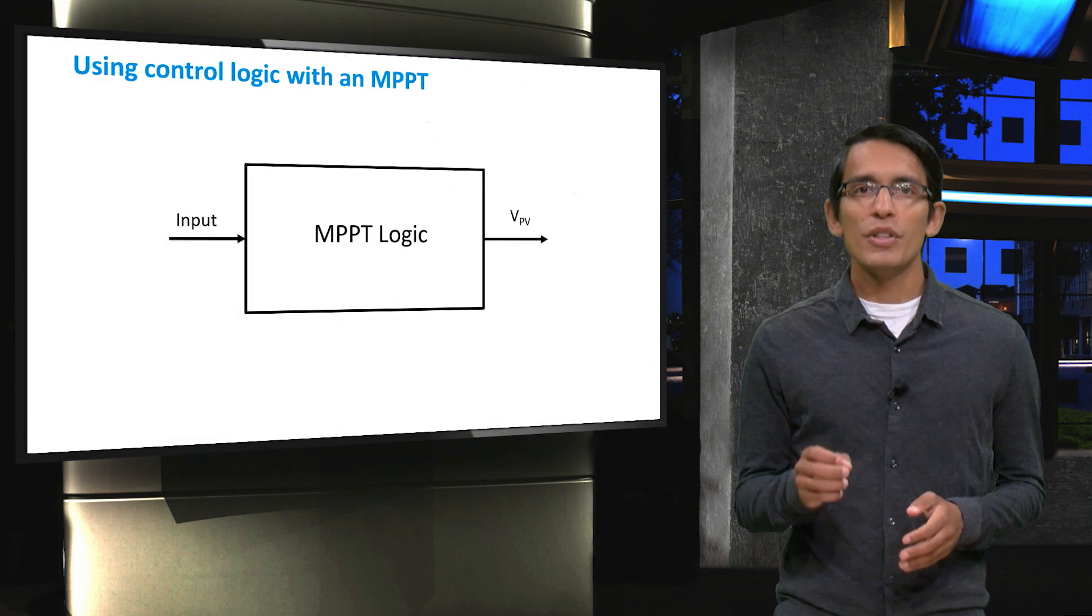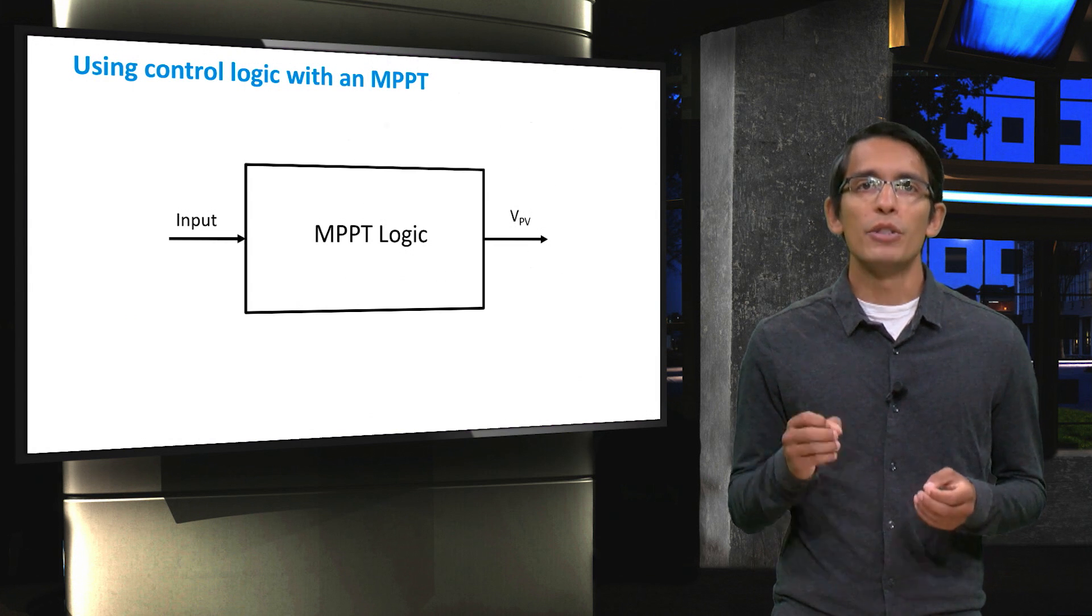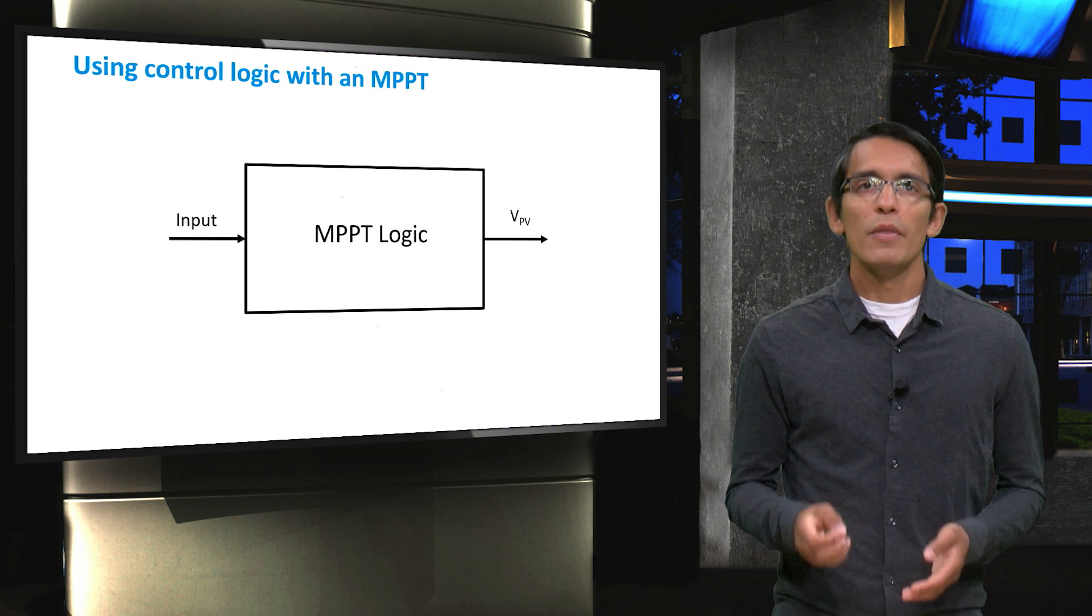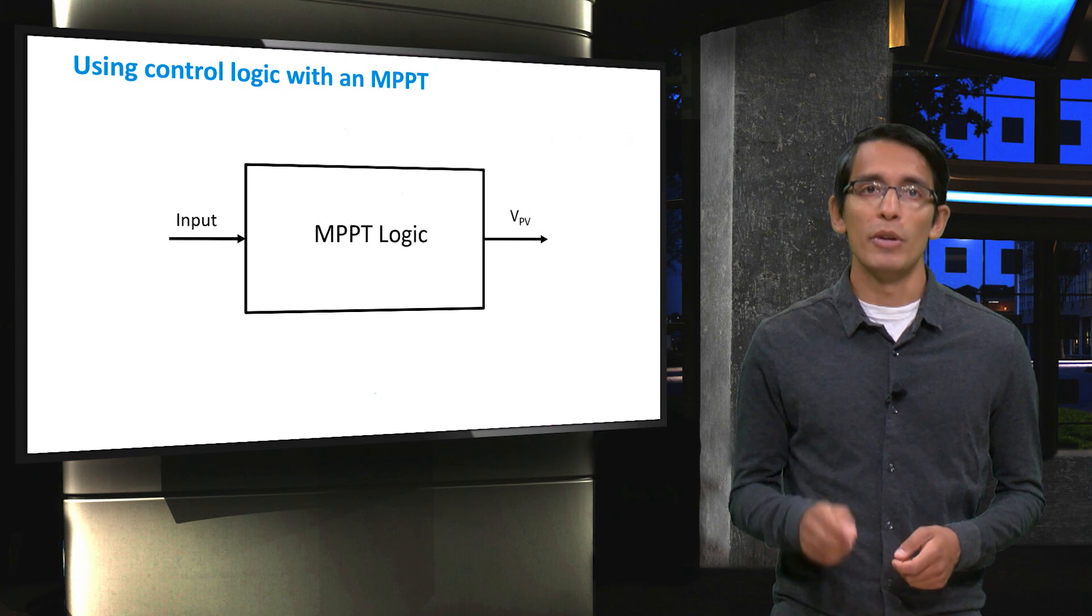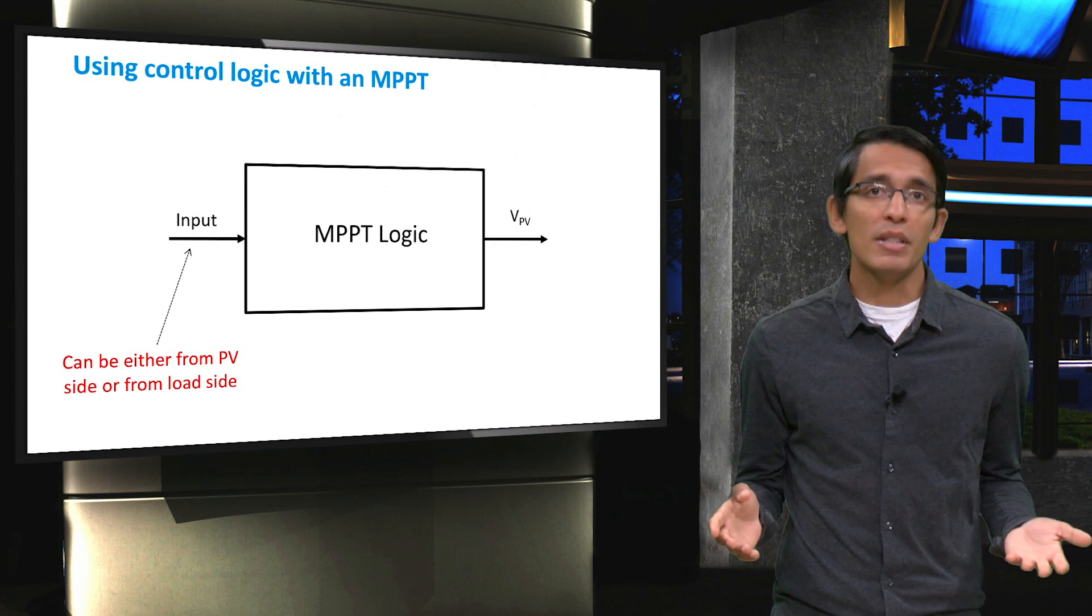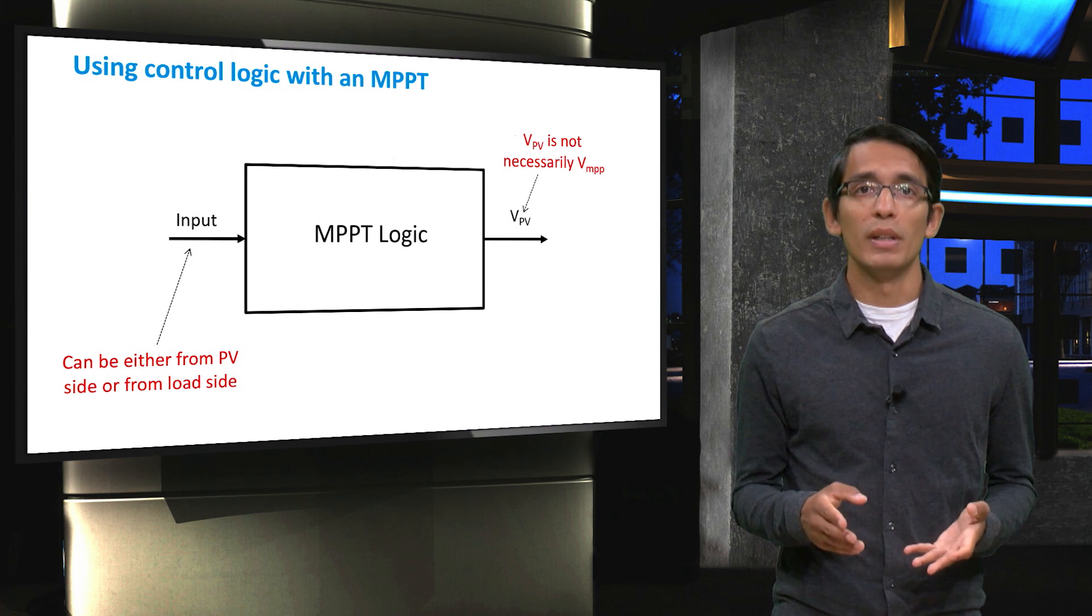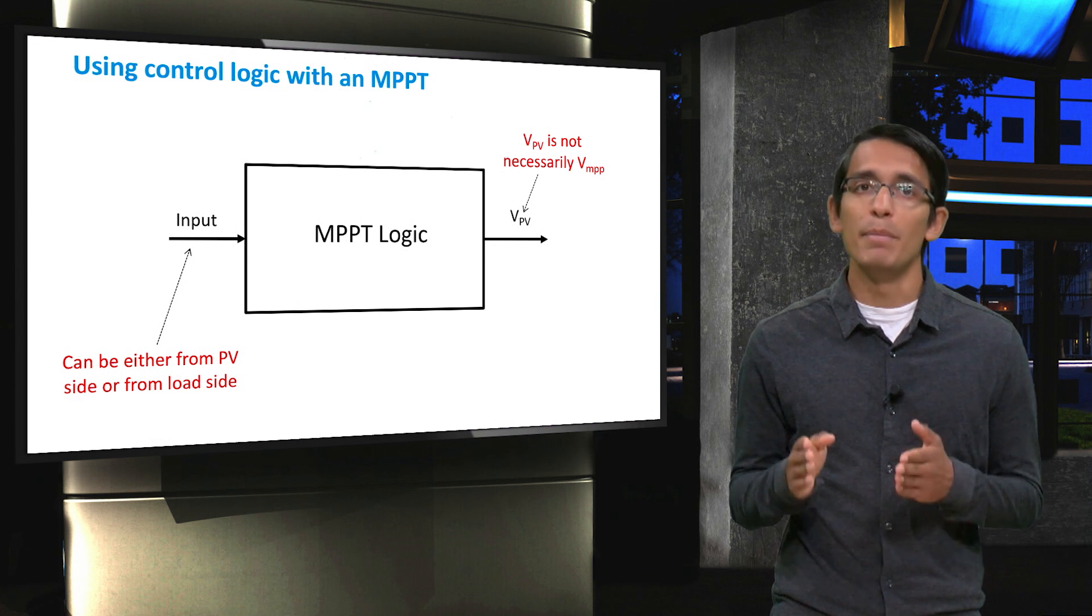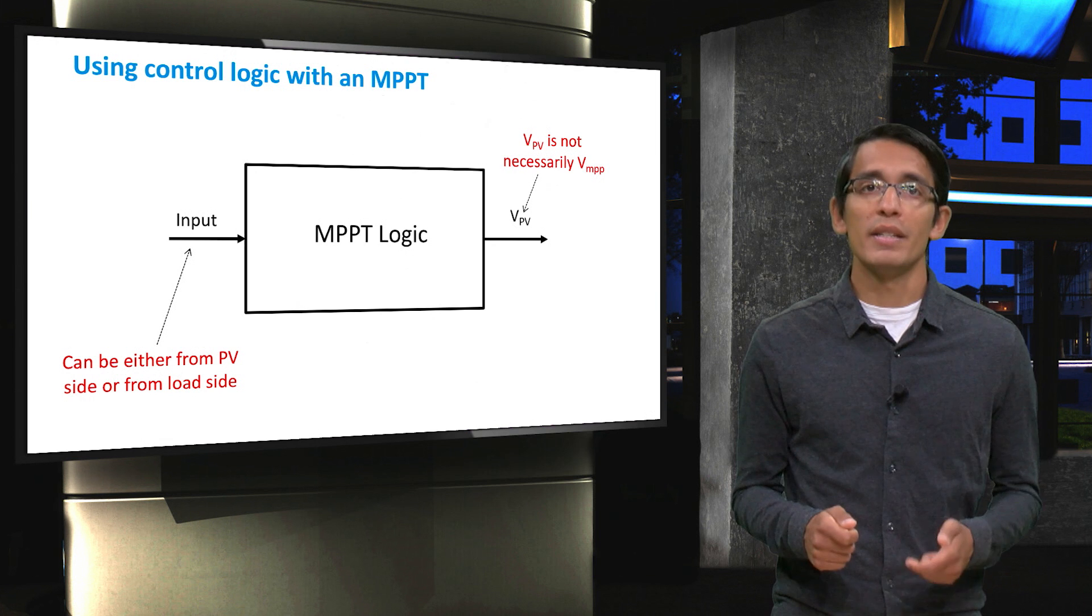However, they all use the same basic principle. That is, a certain parameter value from the system is used as an input, and through some sort of logic the MPP voltage is calculated. Then, using power electronics, the system will apply this calculated voltage to the PV panels, and they will then be operating at their maximum power points. This input could be from either the PV side or the load side, or it could even be something about the ambient conditions that will help us to calculate the input. Also important to realize is that the calculated voltage applied to PV isn't always equal to exactly the VMPP. Accuracy will depend on the algorithm used, but all of them are trying to calculate this as best as possible.